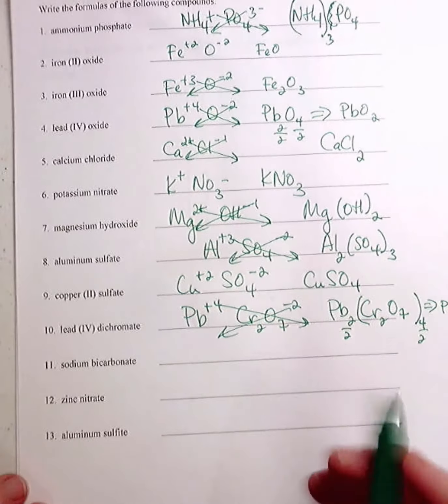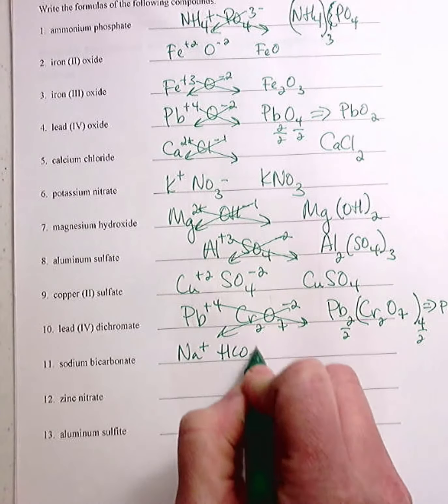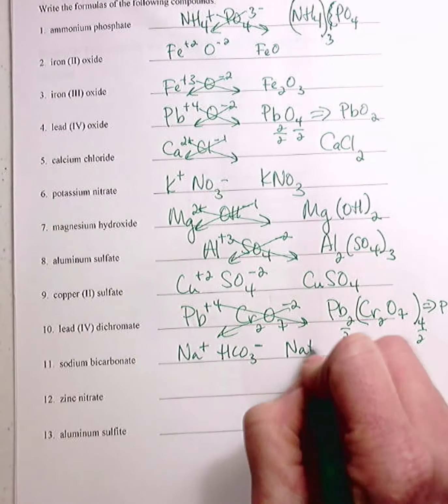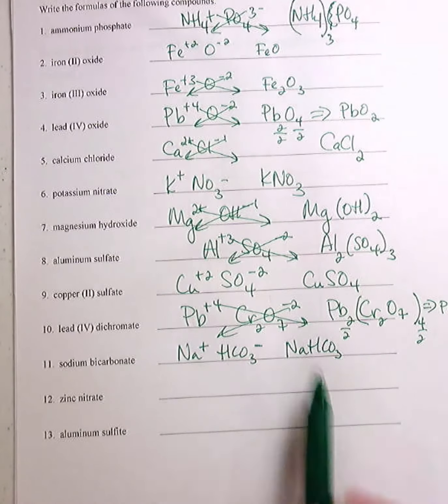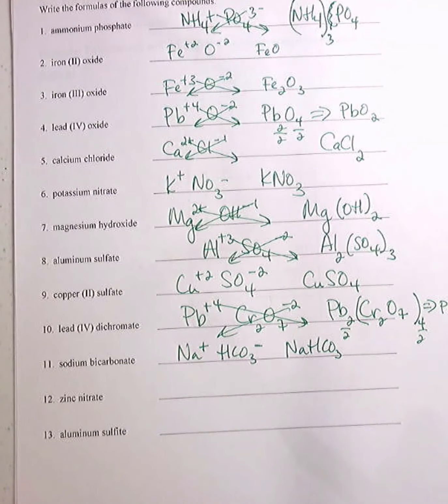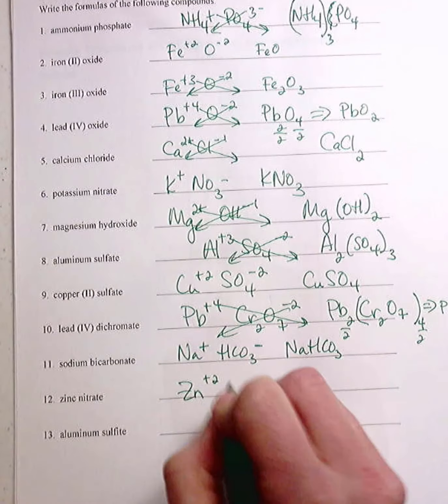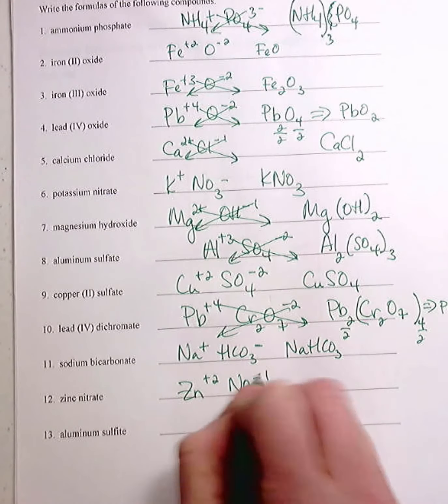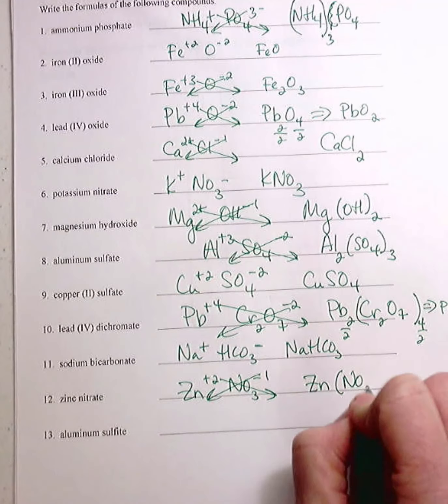Sodium bicarbonate, baking soda, so Na plus, HCO3 minus, so it's NaHCO3. So if you look at a box of baking soda, it will have this listed as the active ingredient or sodium bicarbonate. Zinc nitrate, so you've got Zn, NO3, two.